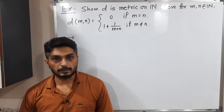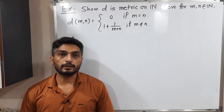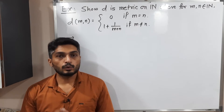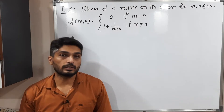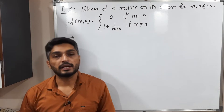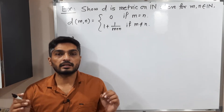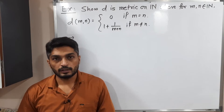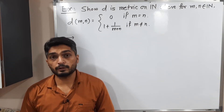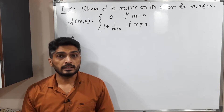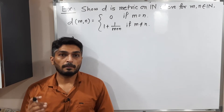Let us discuss this example. We have a function D defined on the set of natural numbers. D(m,n) is equal to 0 if m and n are the same, and equal to 1 plus 1 upon m plus n if m and n are different. We have to prove that this function D is a metric on ℕ, meaning it must satisfy all four conditions of a metric.